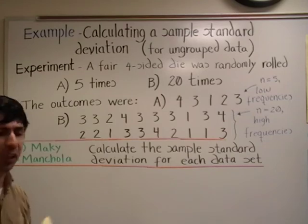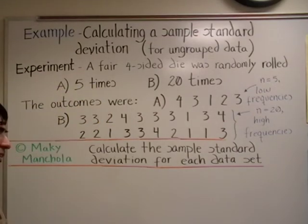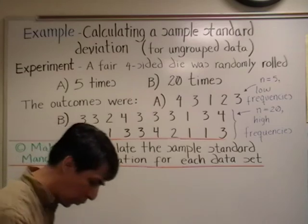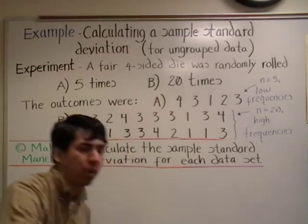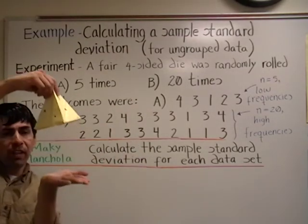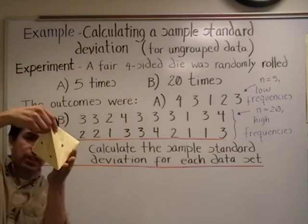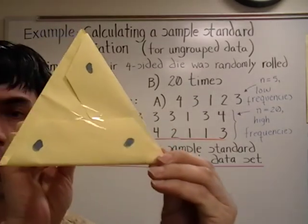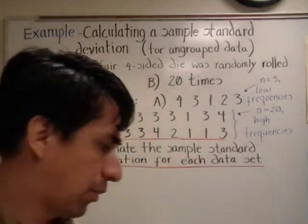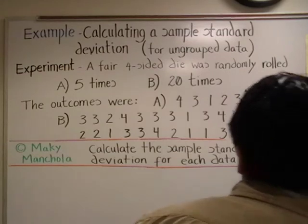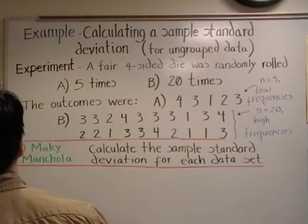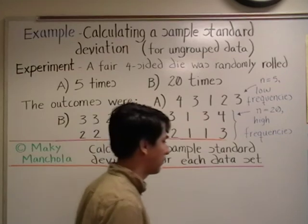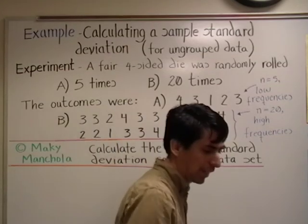Now, how do you roll one of these? You roll it, and then you record the number of the face that the die landed on. In this case, the number is three. So this die landed on three — that was the data value you would record, like one of the data values in our data sets.